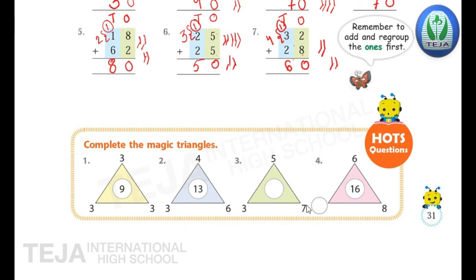Now we will add the third question: 5 plus 7 plus 3. Keep 7 in your mind, draw 5 lines, count after 7: 8, 9, 10, 11, 12. So 5 plus 7 is 12. Now for 12, add 3 more: keep 12 in mind, draw 3 lines, count after 12: 13, 14, 15. So 12 plus 3 is 15. Write 15 in the circle.